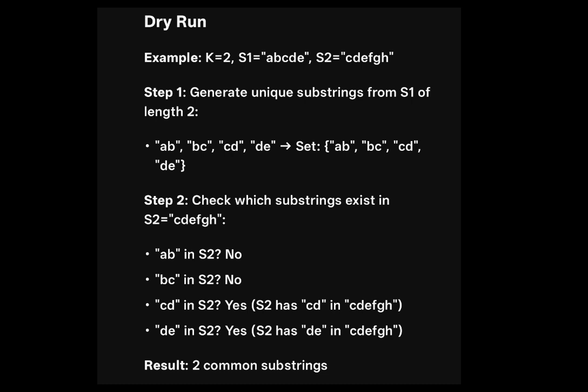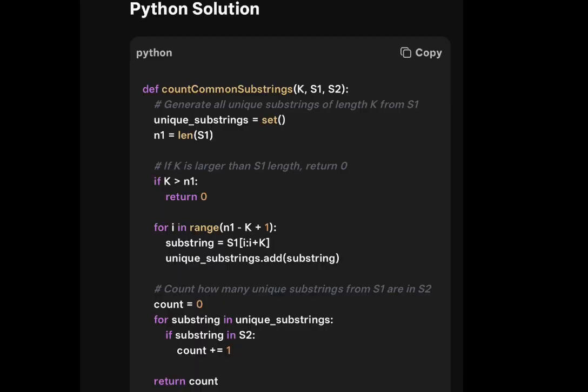Let's do a dry run. With k equal to 2 and s1 equal to 'abcde', we take two-letter substrings: ab, bc, cd, de, and store them in a set. Then we check each against s2, which equals 'cdfg'. Is ab in s2? No. Is bc in s2? No. Is cd in s2? Yes. Is de in s2? Yes. So we return 2 as the count of common substrings.